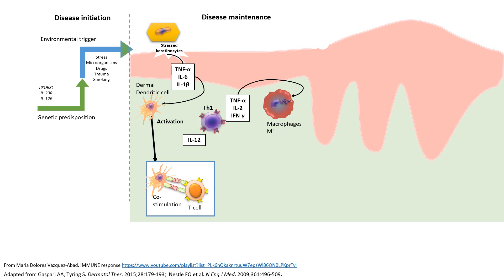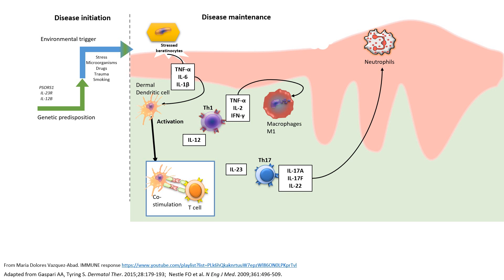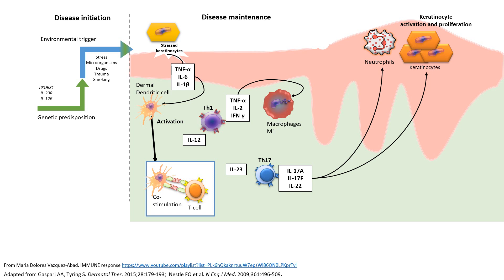In psoriasis, the keratinocyte interaction is also known to activate interleukin-23 when the dendritic cell presents antigen to the T cell. This differentiates another set of T cells into Th17s, which produce a typical Th17 profile — primarily interleukin-17 and interleukin-22 — that stimulates neutrophils. Neutrophils are not normally present in the epidermis, so their recruitment is a hallmark Th17 response. Furthermore, keratinocytes have receptors for interleukin-17, causing them to proliferate and produce more inflammatory cytokines, resulting in psoriatic plaque.